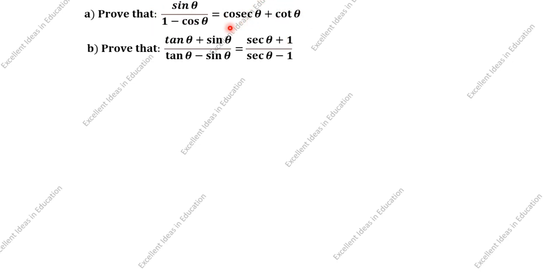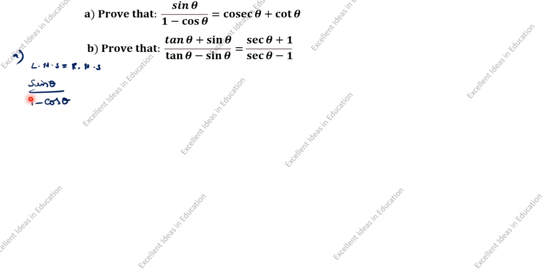We will prove LHS equal to RHS. LHS is sin theta divided by 1 minus cos theta. You see the denominator — it is given as 1 minus cos theta. We will use the rationalize the denominator method. We will multiply and divide by 1 plus cos theta divided by 1 plus cos theta.